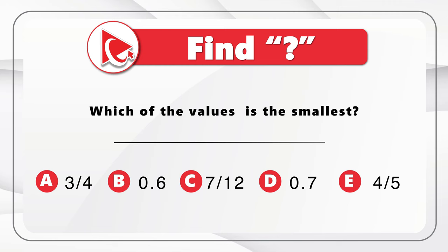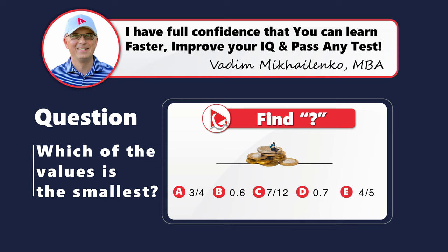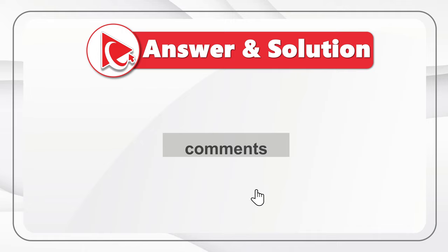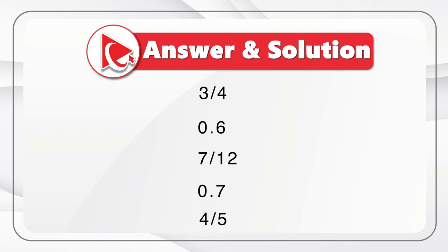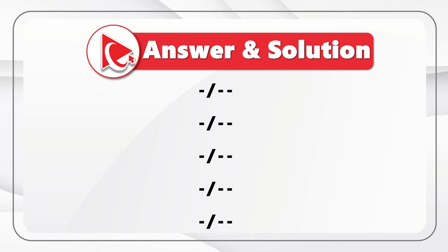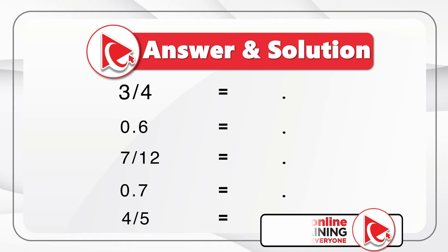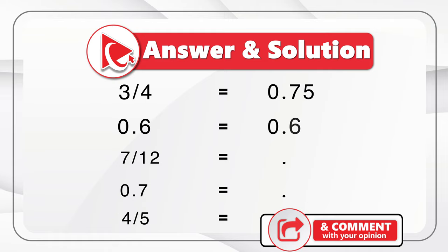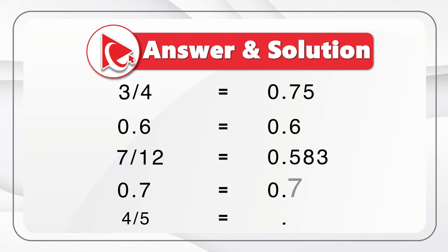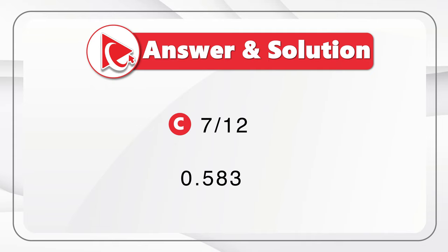To get to the correct answer, we need to convert all the values to a common format. You can convert all the values to decimals, or convert all the values to fractions — it doesn't matter, but it has to be common. I chose decimal format. Three-fourths in decimal is 0.75; 0.6 is 0.6; and seven-twelfths is 0.583. 0.7 has the same value, and four-fifths is 0.8. Now you can easily see that the smallest value is choice C, seven-twelfths, which is approximately 0.58333.